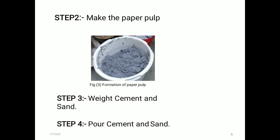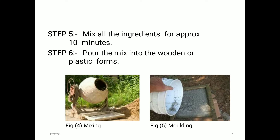Step two: make the paper pulp. Figure three represents the formation of paper pulp — how the soaked paper is turned into paper pulp. Step three: wet the cement and sand. In step four, pour cement and sand. In step five, mix all the ingredients for approximately 10 minutes. In step six, pour the mix into wooden or plastic forms. These figures present the mixing and molding process simultaneously.